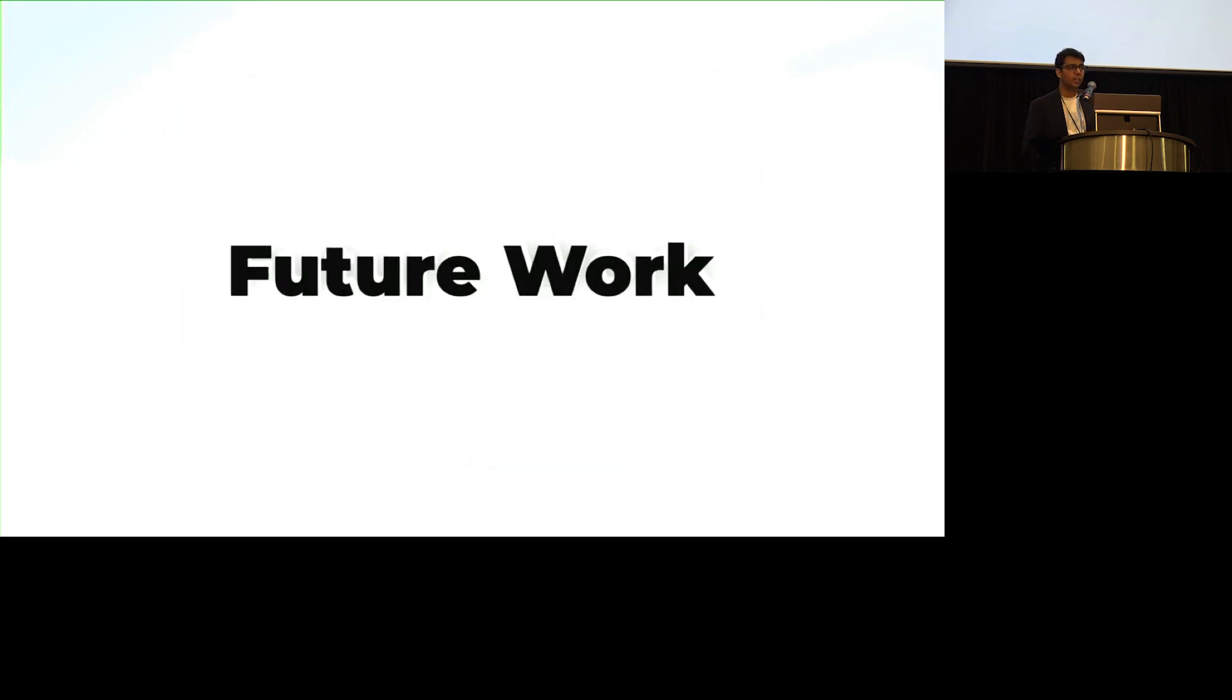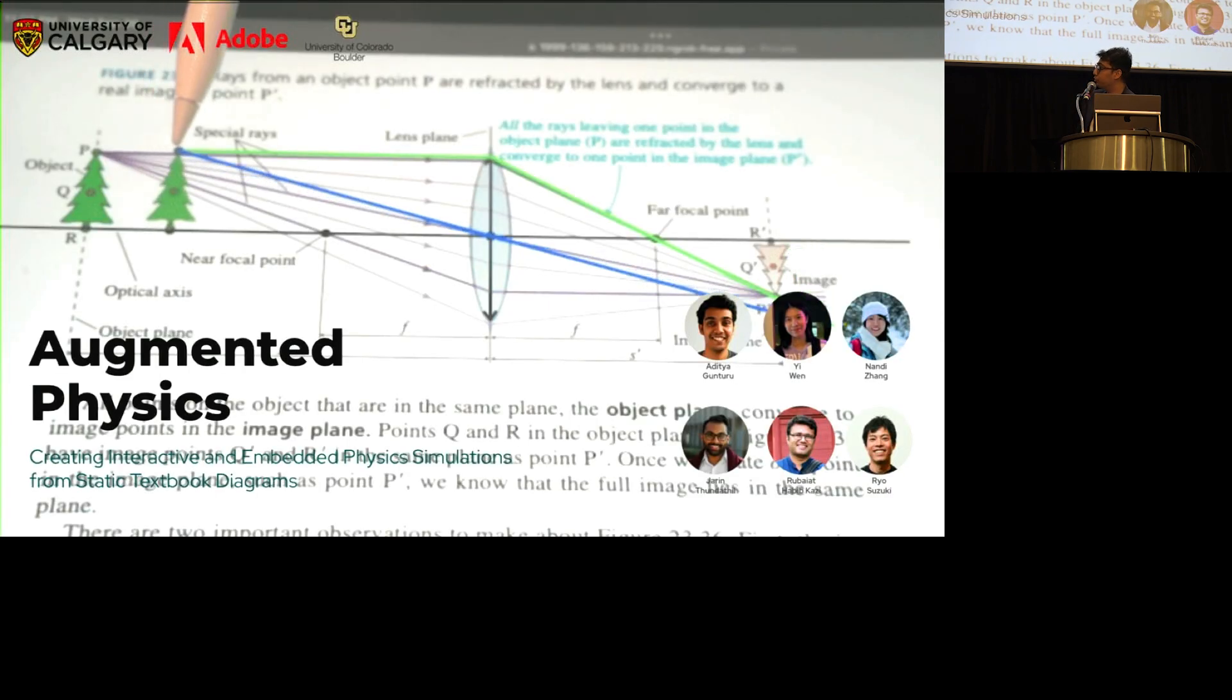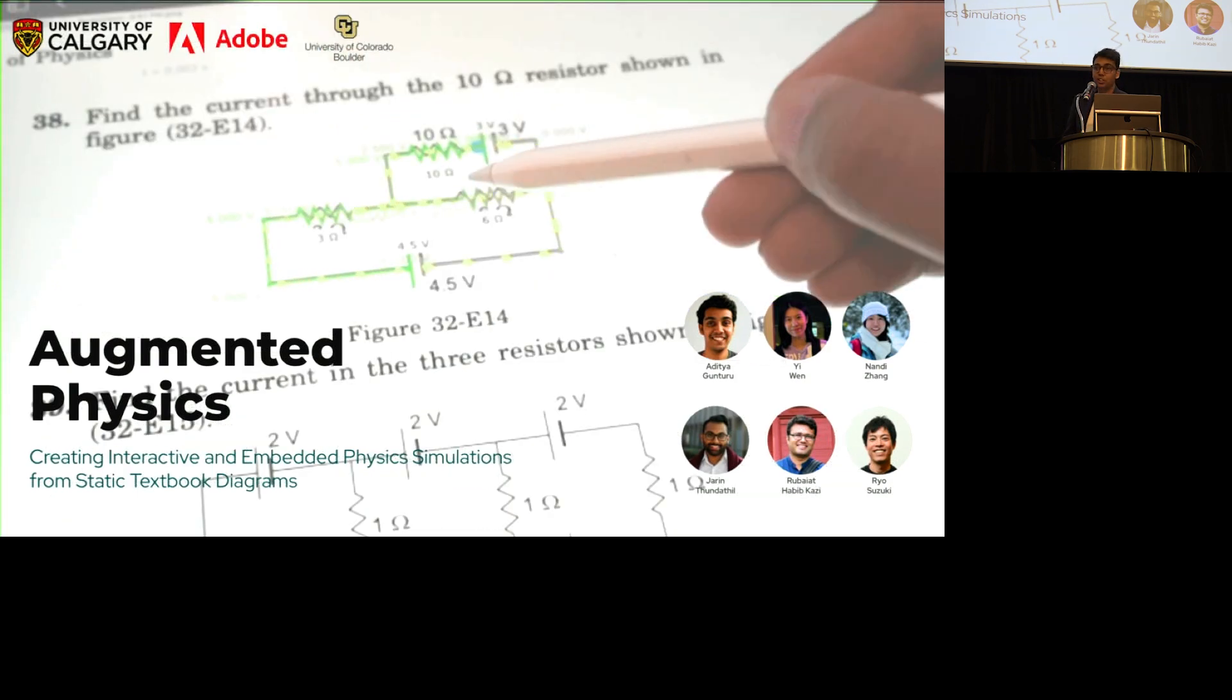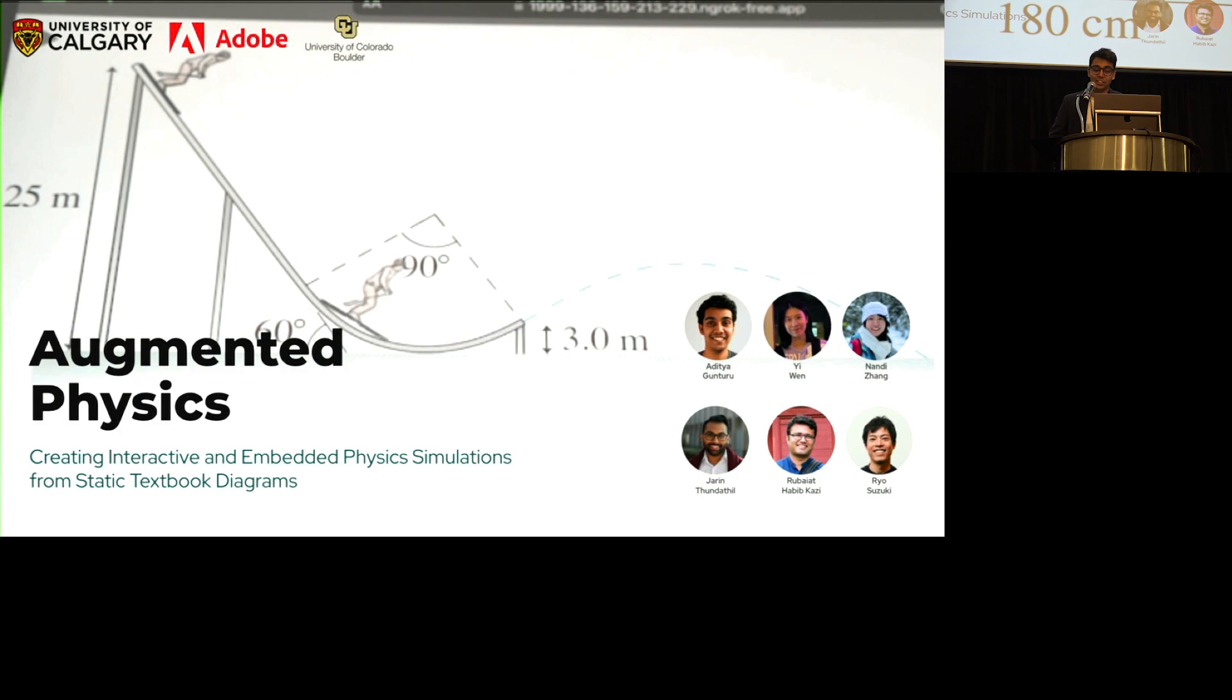And in terms of future work, I envision a future where education is not static, not passive. We can move from, we can turn static and passive diagrams into interactive simulations. And then in another case we can have AI-assisted teaching. For example, if we integrate much more LLMs into our system, we can also have step-by-step guidance with the diagrams for the students. And that was augmented physics in 15 minutes, 12 minutes. So if you have any questions, that would be great. Please don't ask hard questions. Thank you.